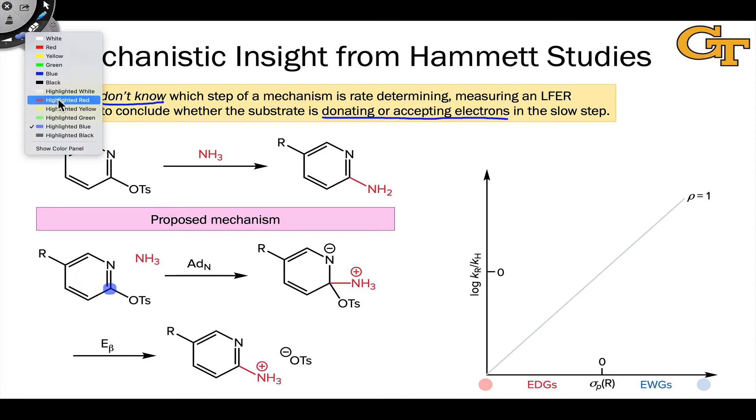But in the second step, the substrate is actually giving away electrons as this nitrogen with negative charge serves as the starting point for kicking out the tosyl group. In this case, we would expect electron donating groups to accelerate this step.